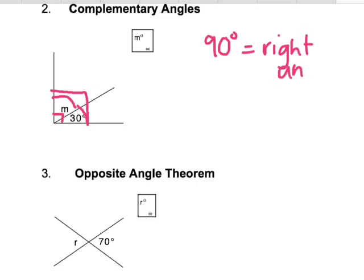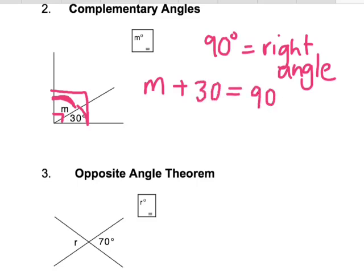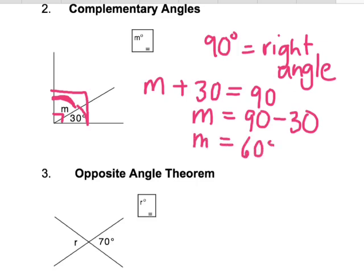If we have an unknown angle and 30 degrees, the whole thing has to add up to 90. Because M plus 30 equals 90 and we need to solve for M. So 90 take away 30 — angle M equals 60 degrees.